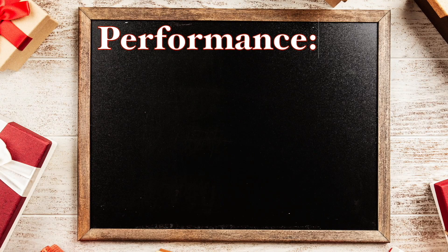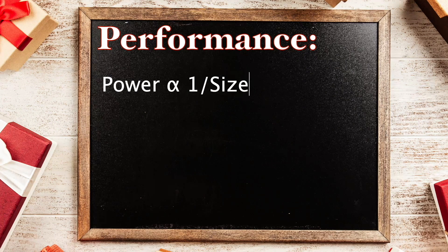Third is performance. Performance of a chip is generally influenced by transistor size in terms of switching speed and operational frequency. Smaller transistors allow for faster switching speeds and higher clock frequencies. Beta is a constant factor representing the performance scaling factor, and typically beta is greater than 1, so performance improves as transistor size decreases.